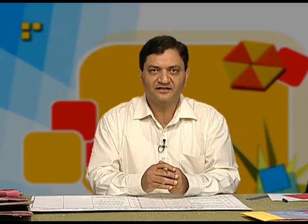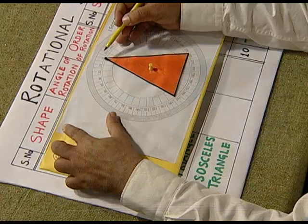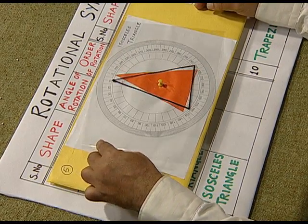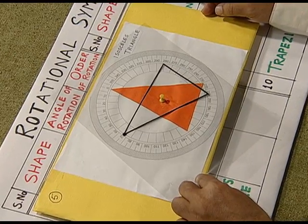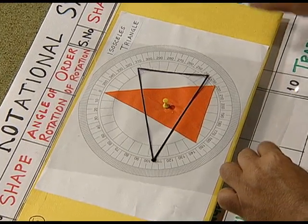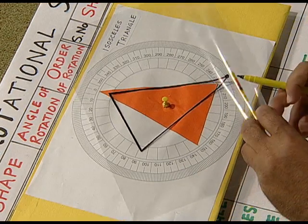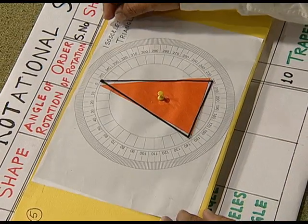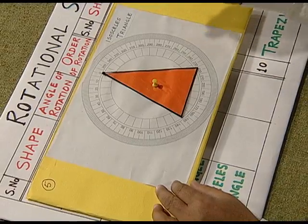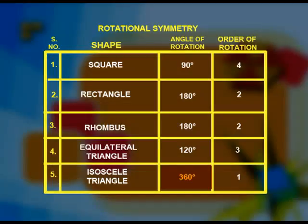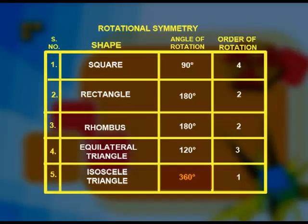Next, we take the case of an isosceles triangle. The top position is shown by a small dot. On rotating it, we find that nowhere in this complete revolution does the isosceles triangle coincide with itself. It is only after a complete turn — a rotation of 360 degrees — that the isosceles triangle coincides with itself. Therefore, there is no rotational symmetry. The angle of rotation is 360 degrees and the order of rotational symmetry is 1.